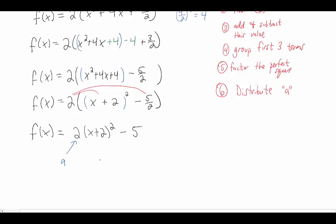We have our a value is still 2, we have our h value which is negative 2, and we have our k value which is negative 5.